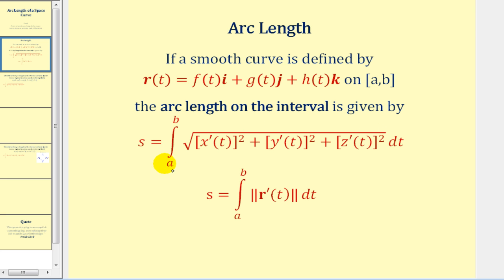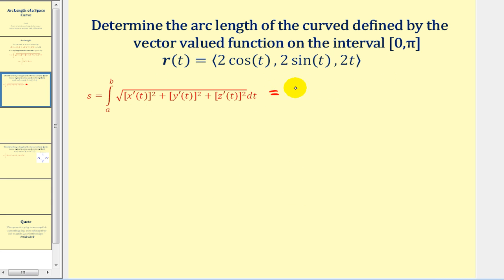This definition of arc length should look pretty familiar because when we talked about this using parametric equations, it was defined in almost the exact same way. However, we can now express the arc length formula as the definite integral from a to b of the magnitude of r prime of t, with respect to t.